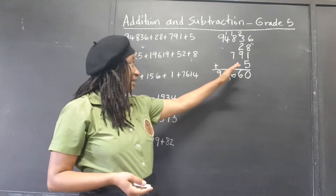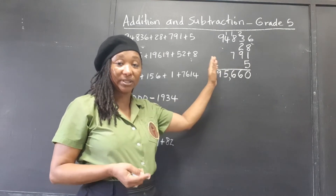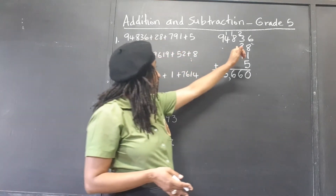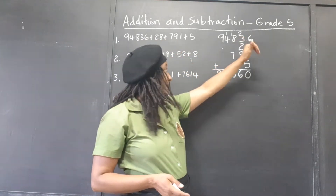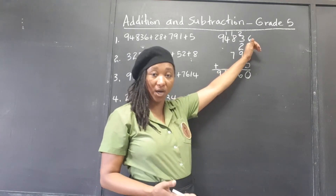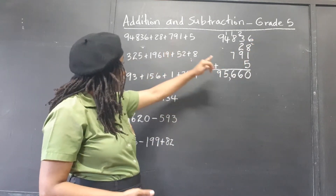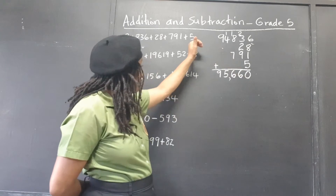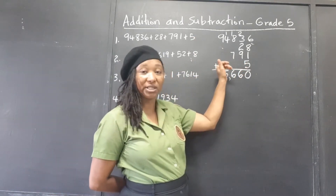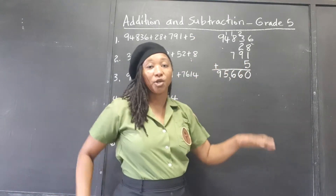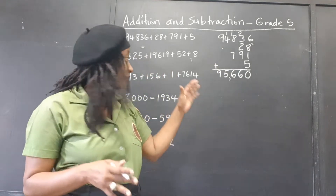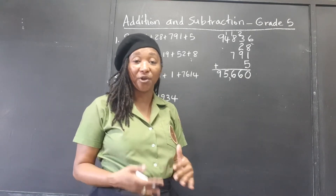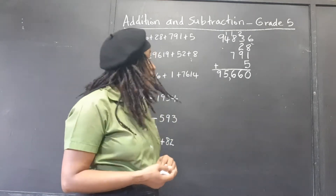It's very important that you line up your place values — line up your digits under the correct place. So 28 is two tens, eight ones: the two tens goes under the tens, the eight ones goes under the units. 791 — we line up the seven under the eight; this is 800, that's 700. And the five must go here, not elsewhere. Once you have that set and you've lined up, then you're well on your way. All you have to focus on is doing your calculation properly.